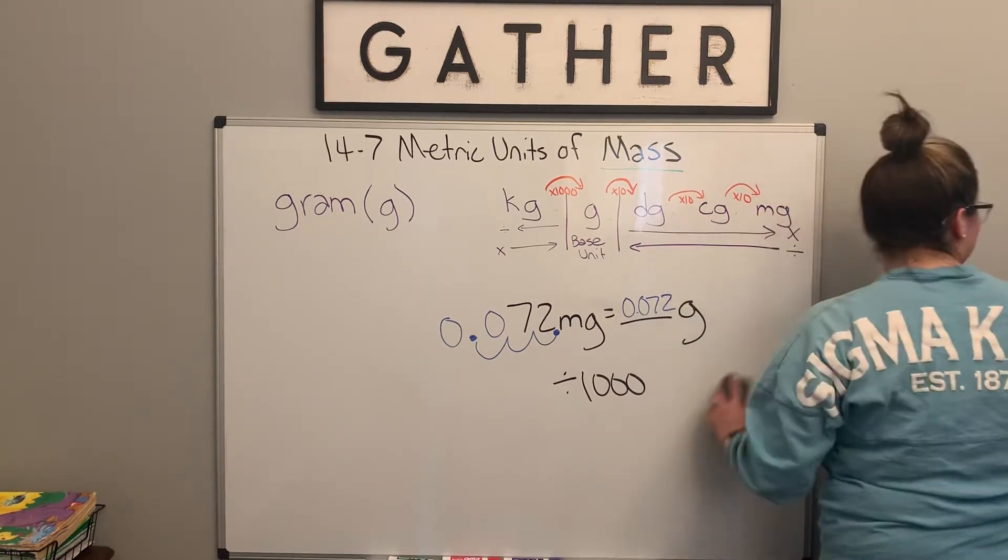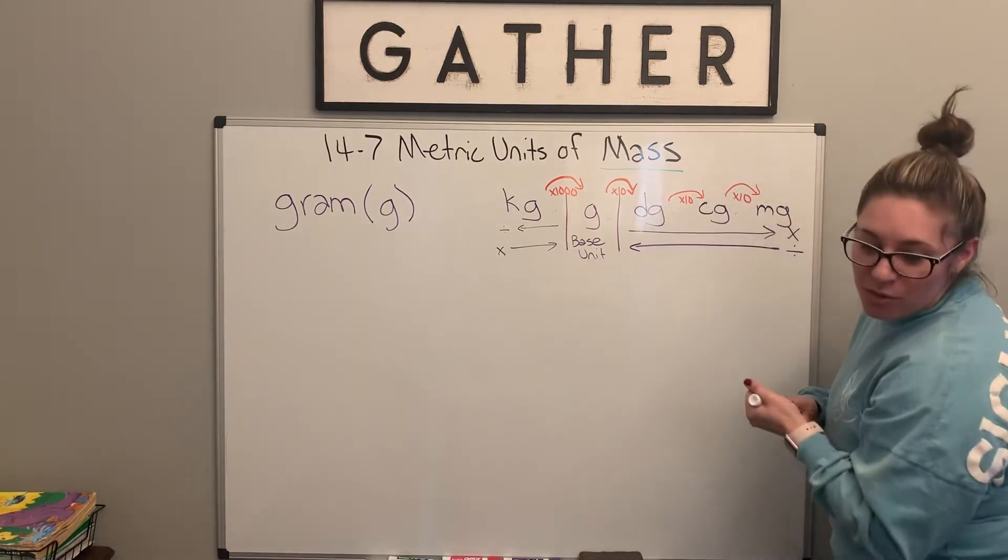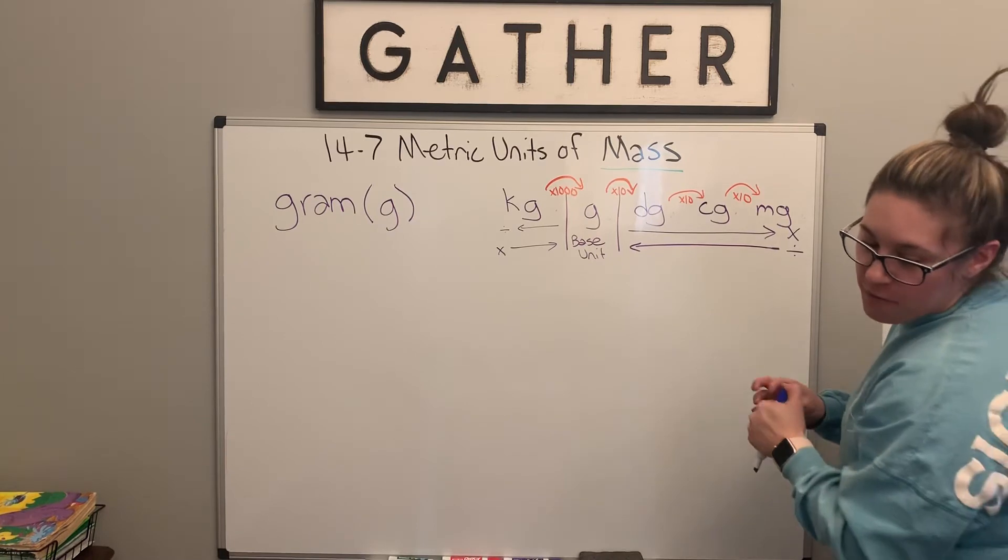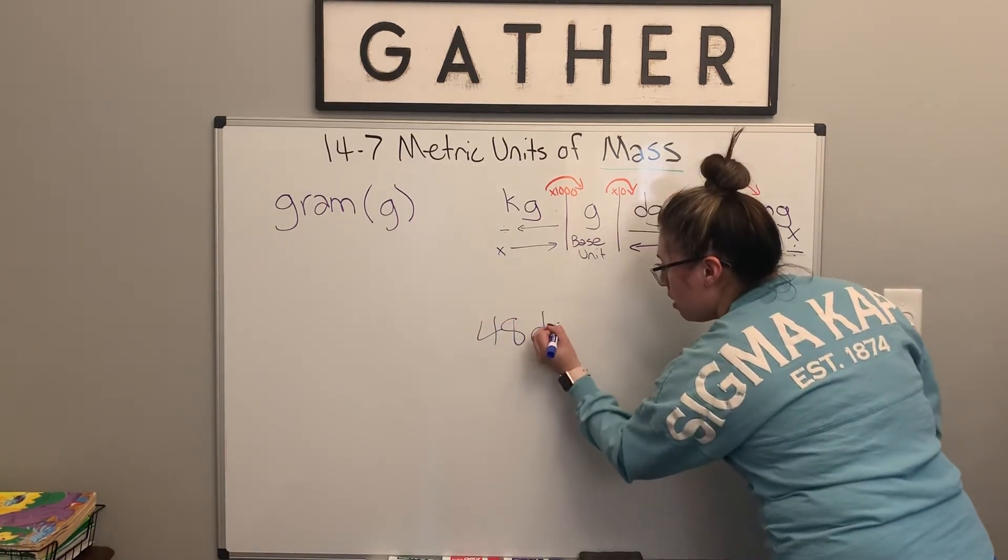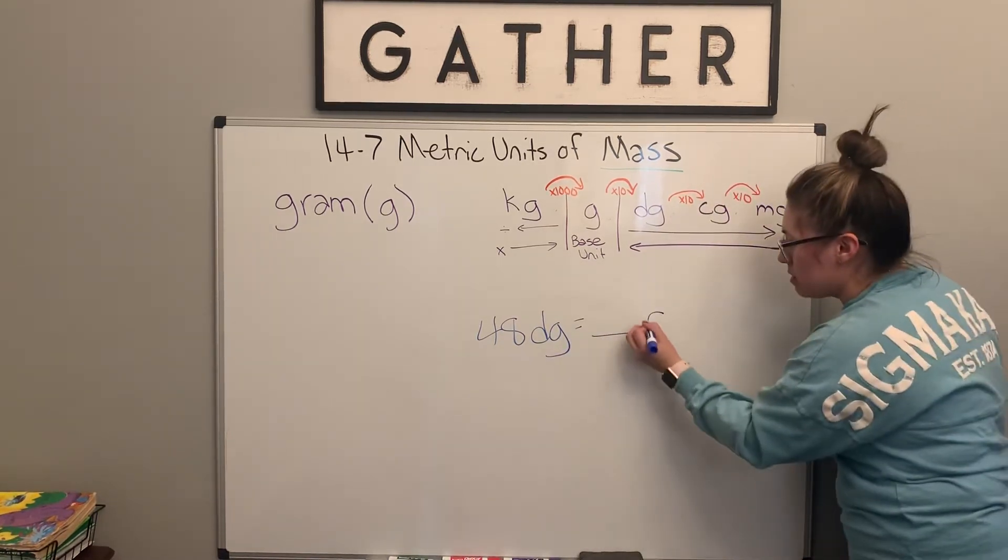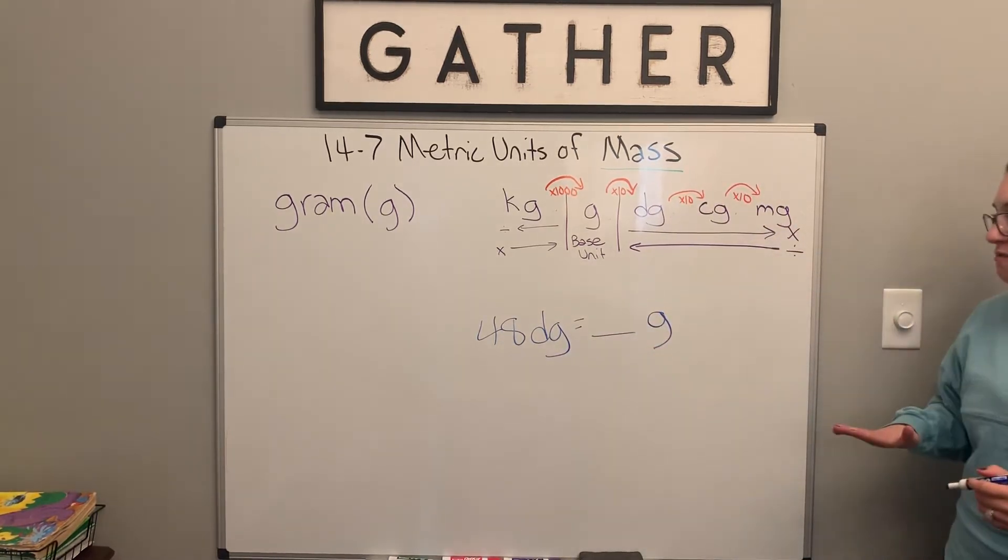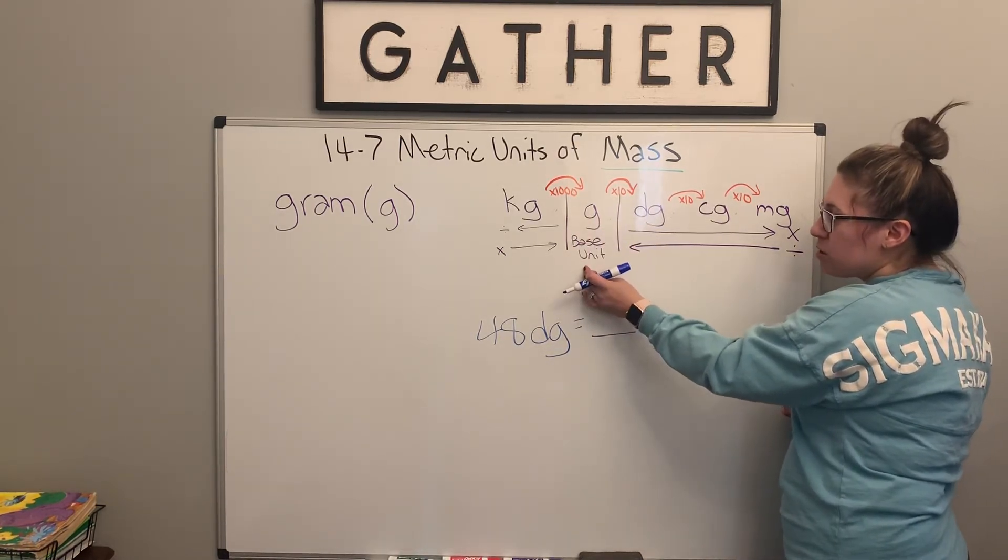All right. So our next one. We are now going to look at 48 decigrams. And we're going to convert it into grams. So remember, if you want to pause the video, you can to see if you can solve it yourself and then check it with my work. So we're going right here from the decigram and we want to go over to our base unit, which is the gram.